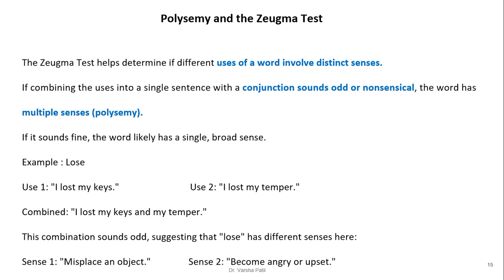The zeugma test helps determine if different uses of a word involve distinct senses. If combining uses into a single sentence with a conjunction sounds odd or nonsensical, the word has multiple senses or polysemy. If it sounds fine, the word likely has a single or broad sense. For example, 'I lost my keys' and 'I lost my temper' — combining them as 'I lost my keys and my temper' sounds odd, suggesting 'lost' has different senses here.